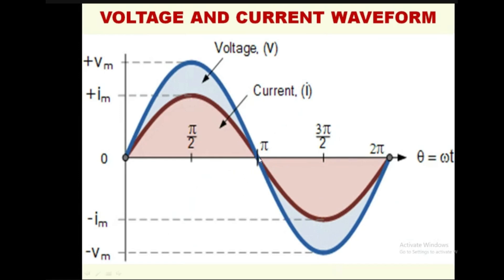After the current reaches zero, the direction of the current flow changes because the direction of the pressure changes. The positive half cycle is the pushing force and the negative half cycle is the pulling force — it is changing the direction. Negative does not mean negative in value; it means the direction of force has changed — instead of pushing, it is now pulling.